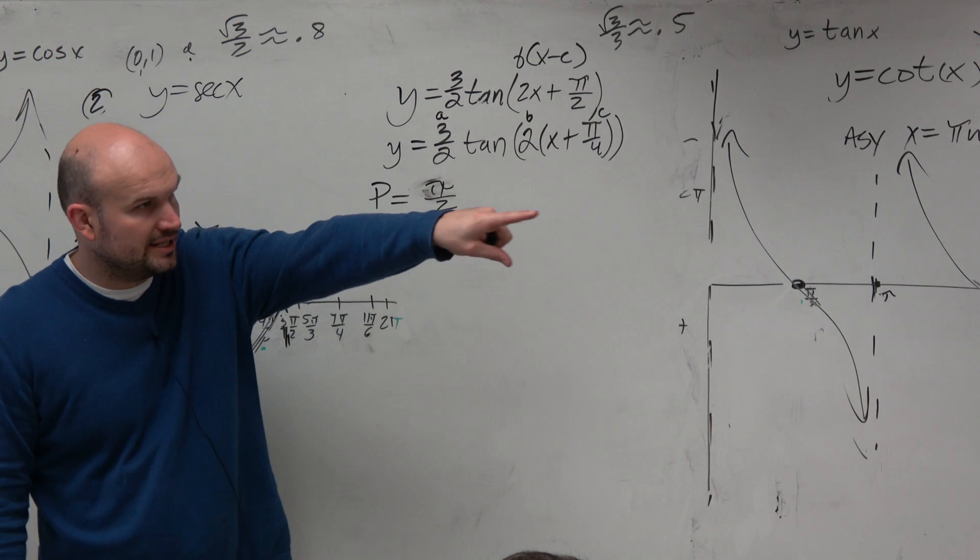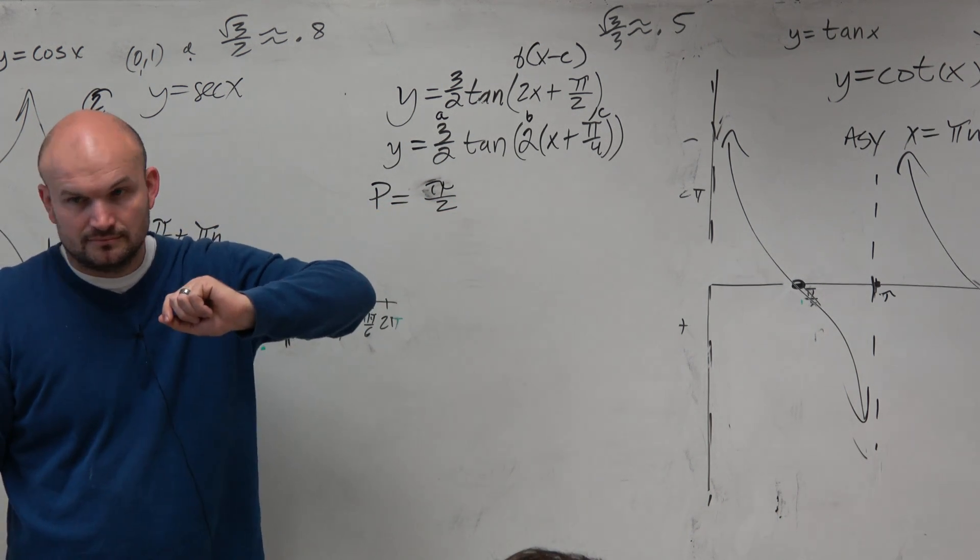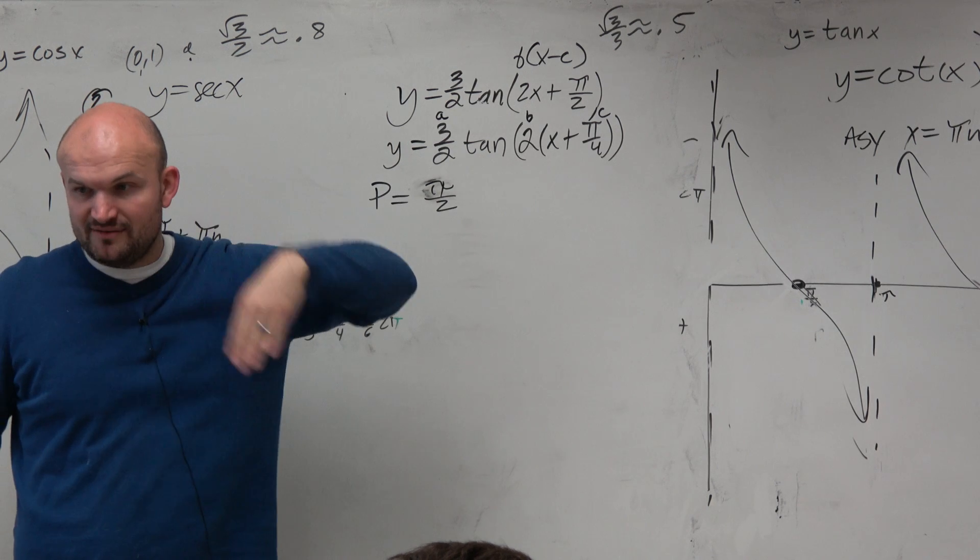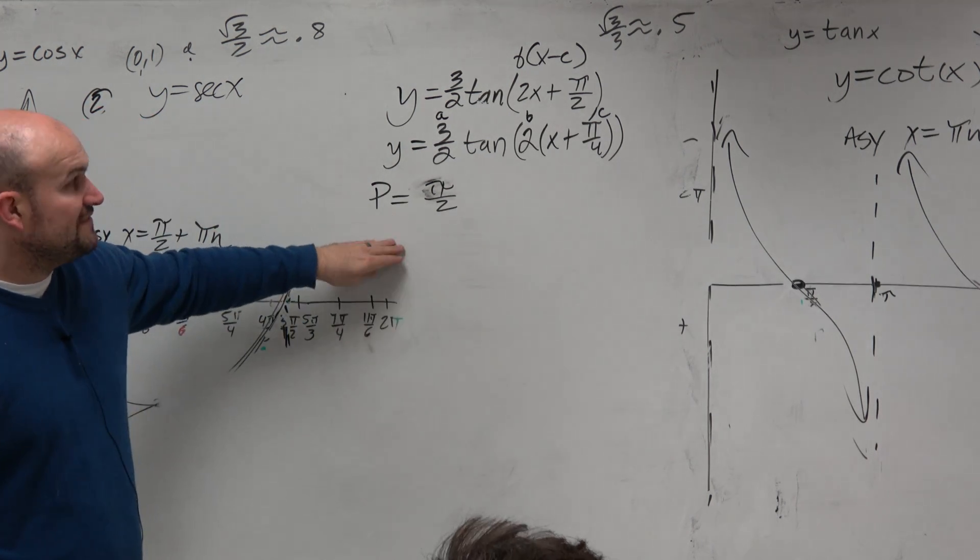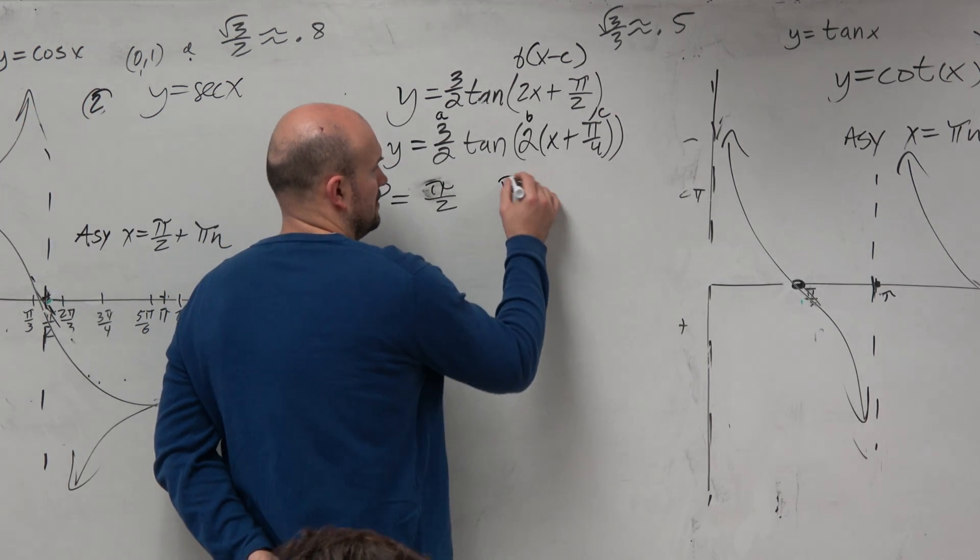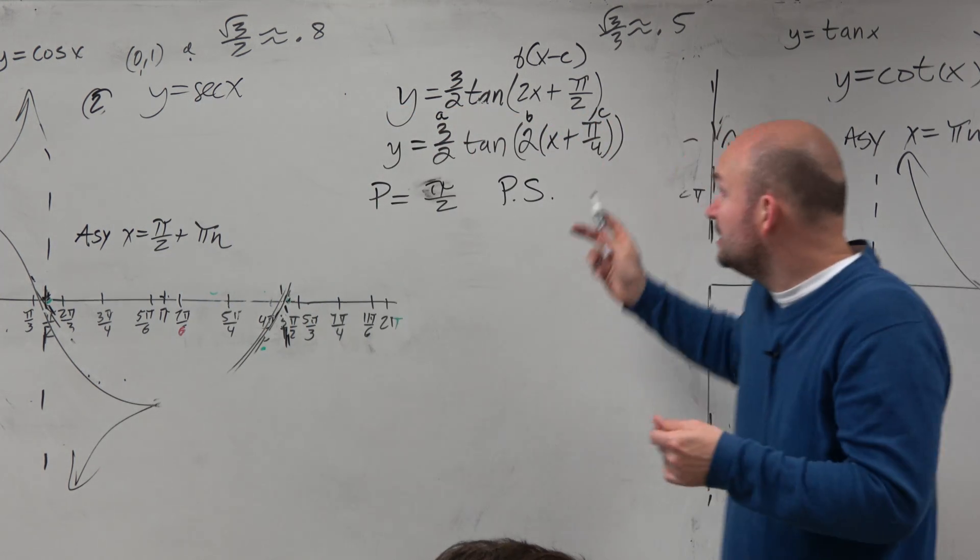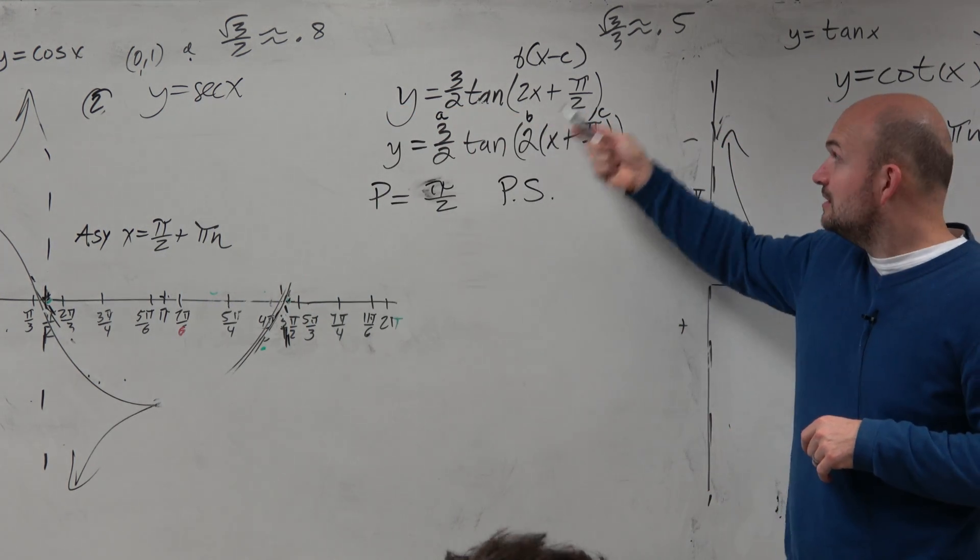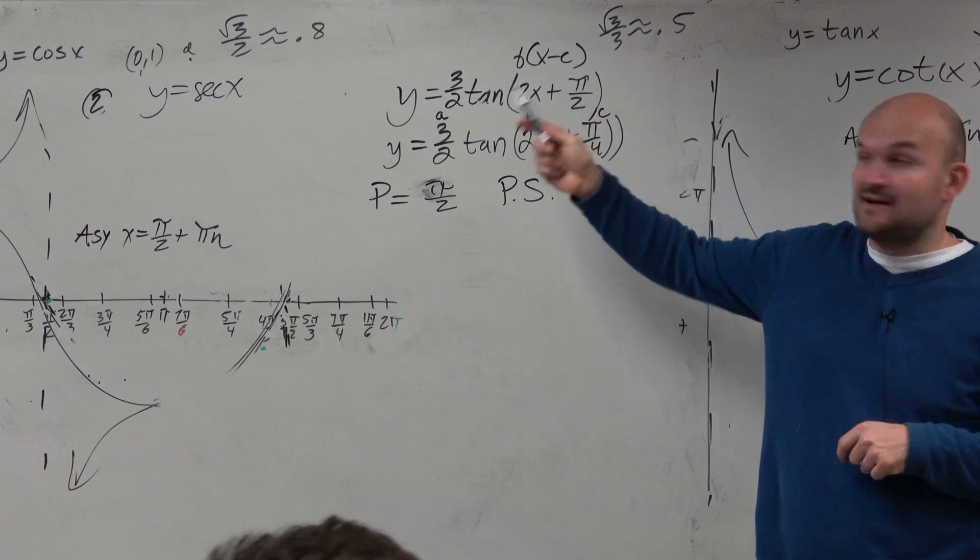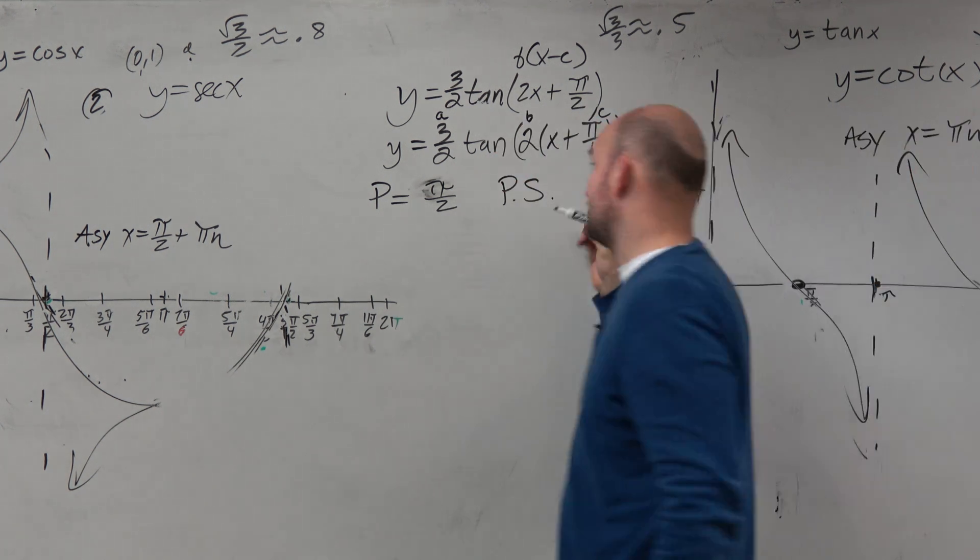You take period divided by b. For sine and cosine, it's 2 pi divided by b. The phase shift, remember, phase shift is your c. But it's only your c when you factored out that b. It is not pi halves to the left. It is pi over 4 to the left.